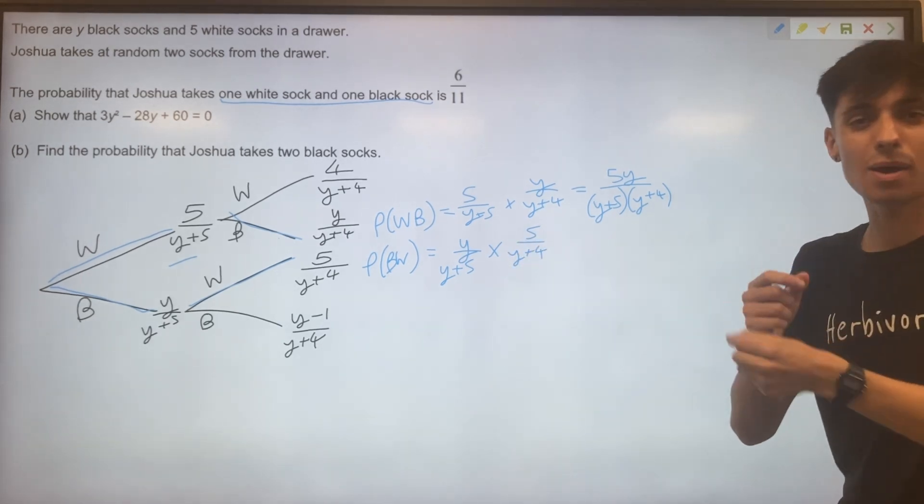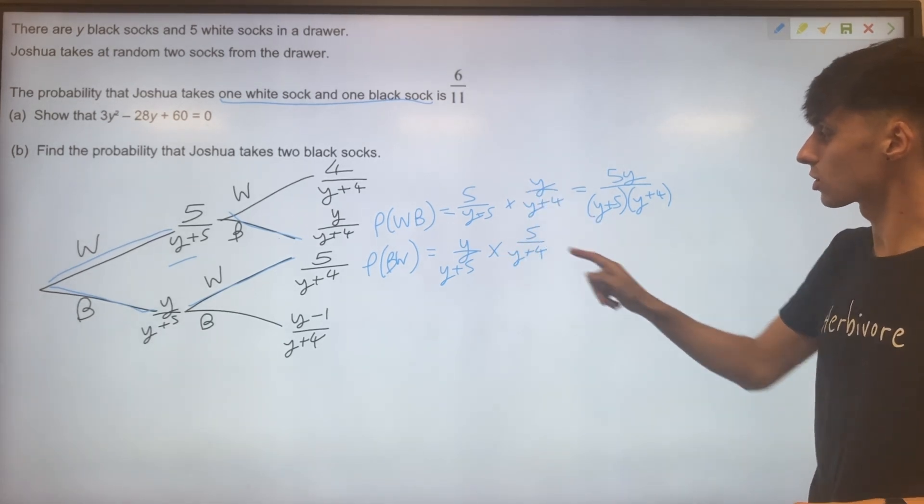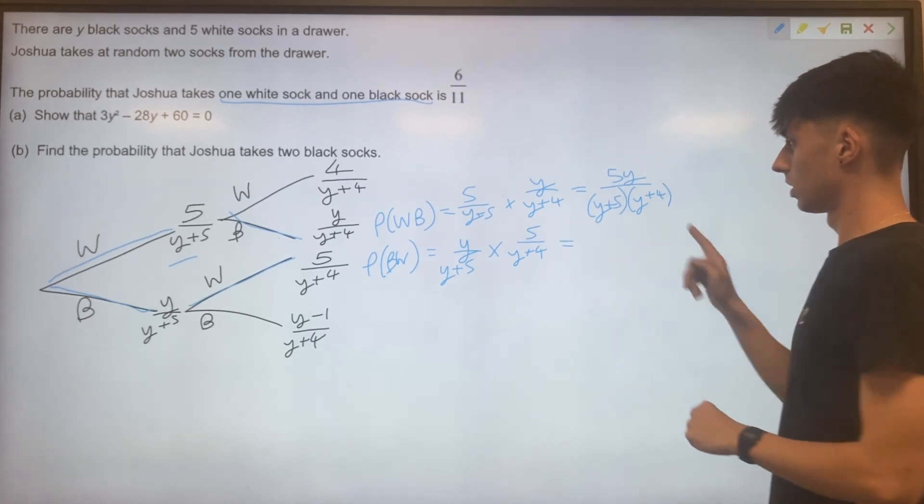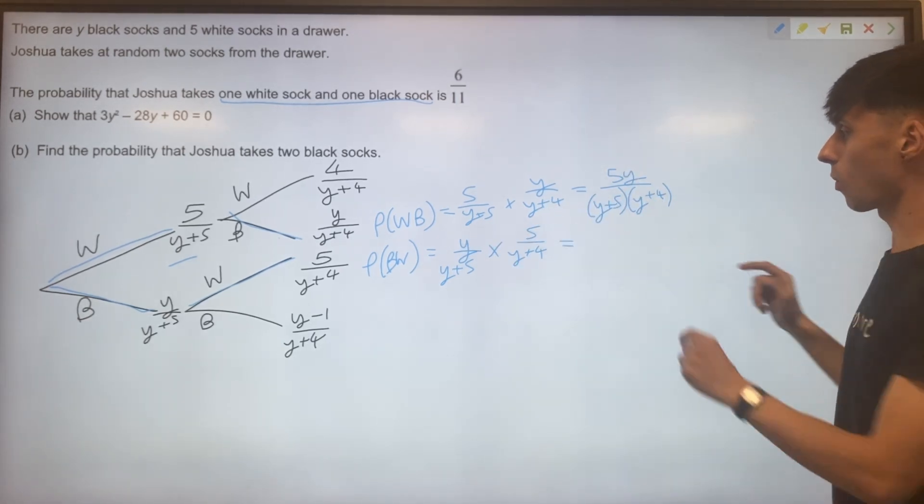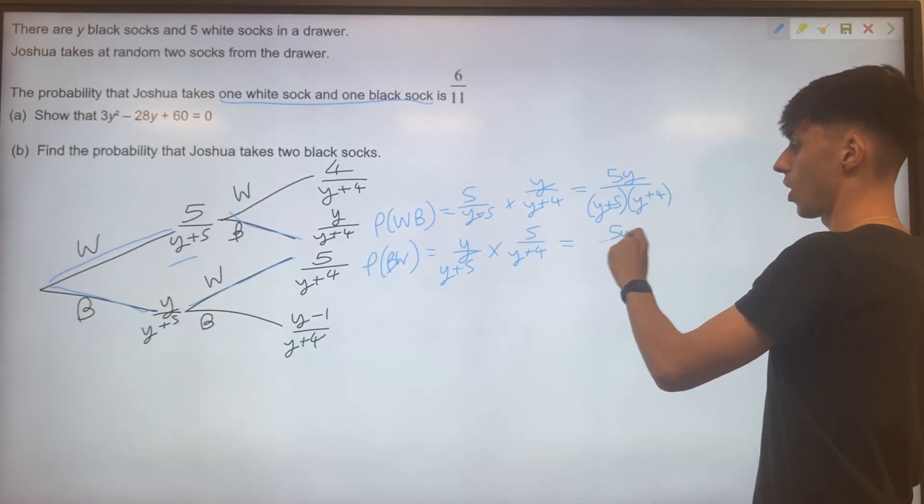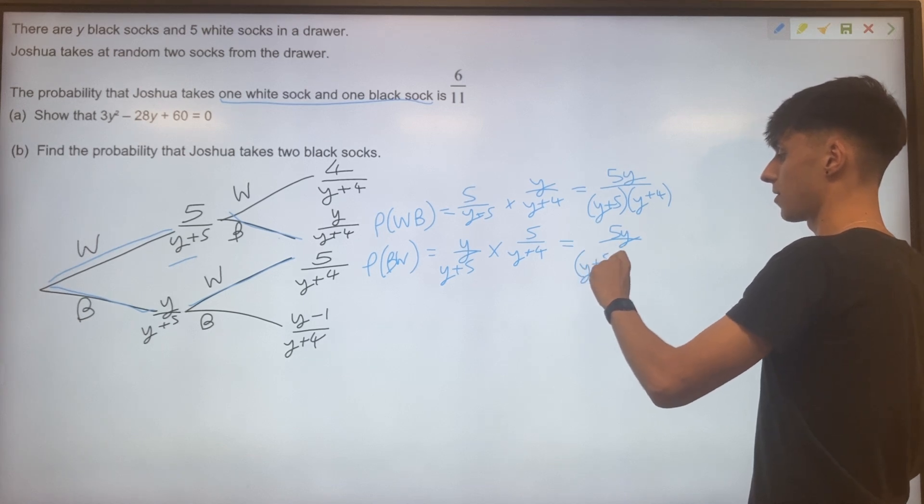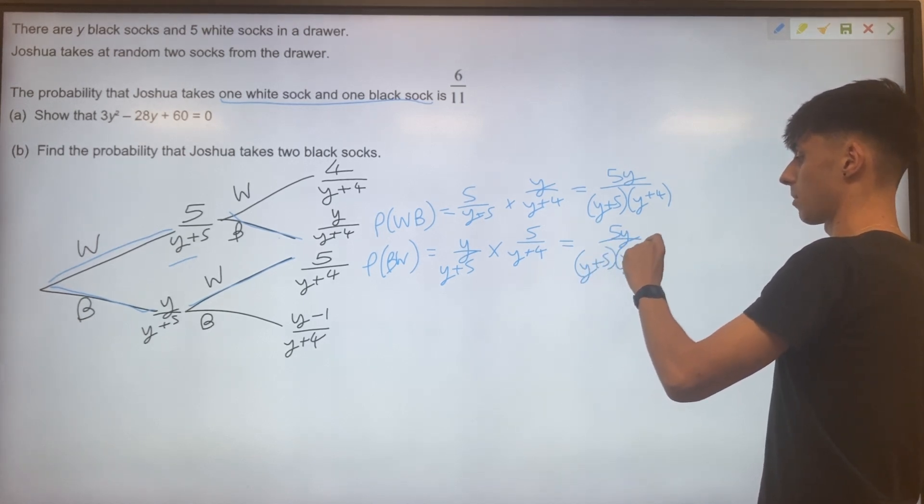Likewise, for our black white combination, we've got y over y plus five times five over y plus four. And we've got some amount of symmetry going on here. You can see these look very similar. Again, we're going to have 5y over y plus five brackets y plus four.